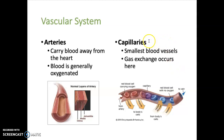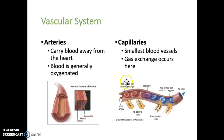Capillaries are the smallest blood vessels that connect arteries to veins, and their walls are very, very thin — just a single layer of epithelial tissue. Their walls consist only of the tunica intima, the innermost layer of a vessel; they don't have the other two outer layers. The function of capillaries is to allow for the exchange of nutrients and gases between the blood and surrounding cells and tissues.